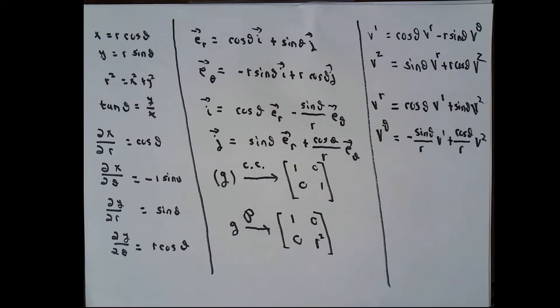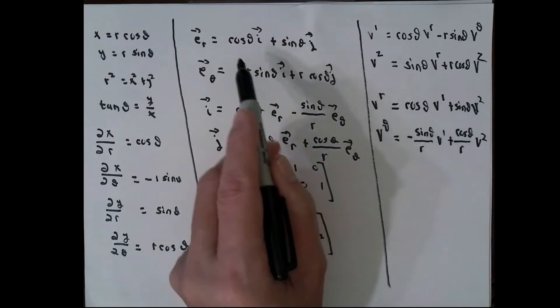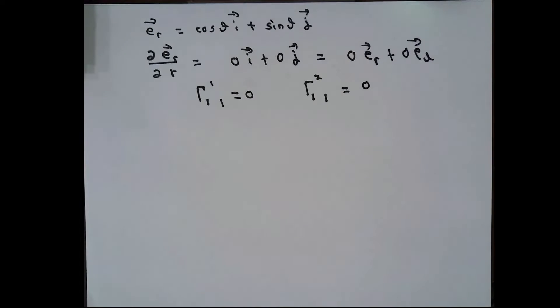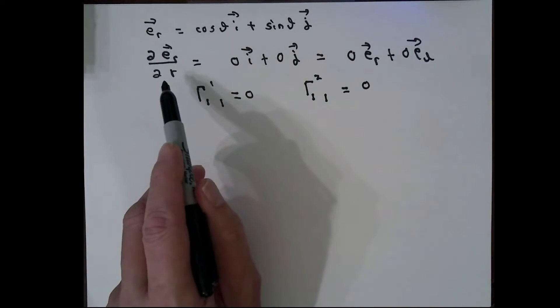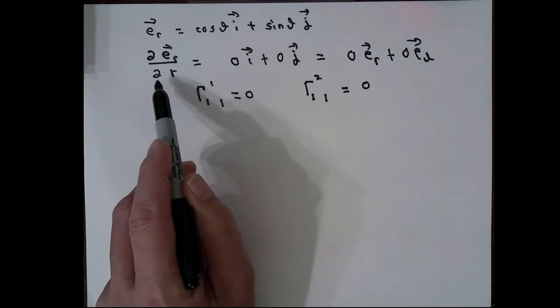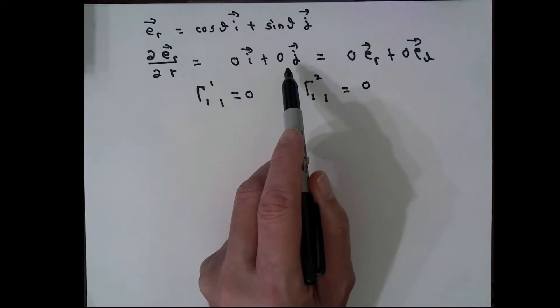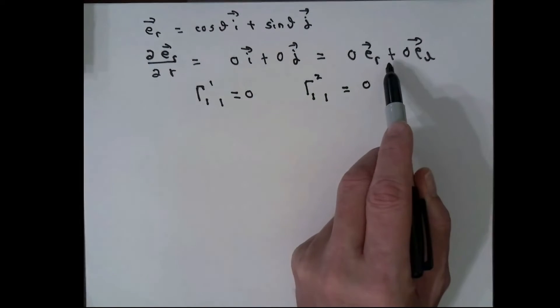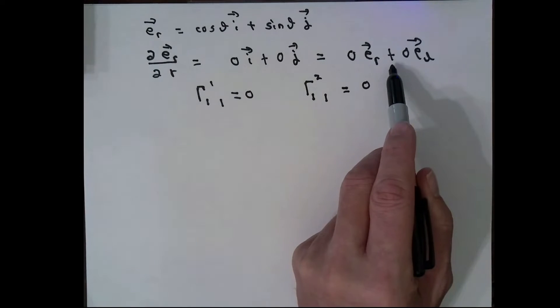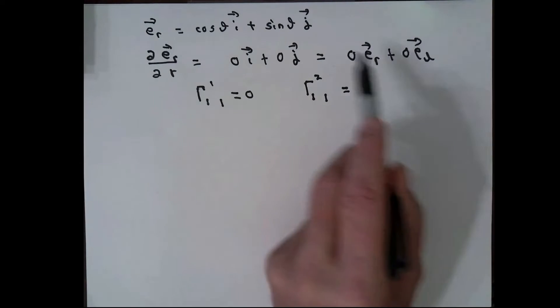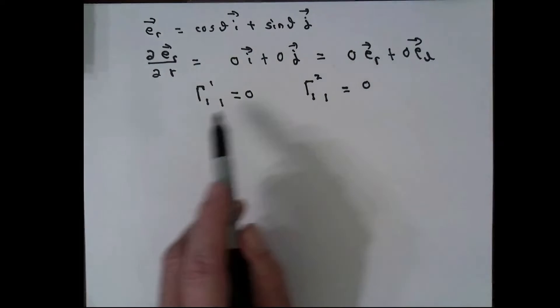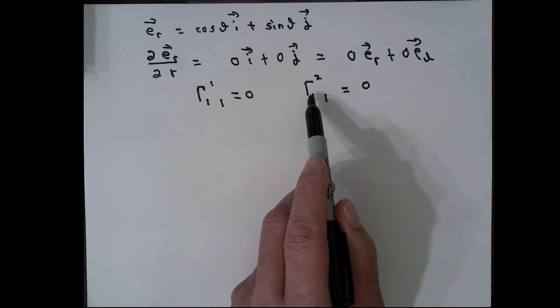I'm going to begin by looking at that one. Since the first basis vector in polar coordinates doesn't depend on r, the partial of e sub r with respect to r is zero — zero i plus zero j. But if a vector is the zero vector, its components in every coordinate system are zero. So this is zero times e sub r plus zero times e sub theta. This coefficient zero is gamma 1 1 1, and this coefficient zero is gamma 2 1 1.